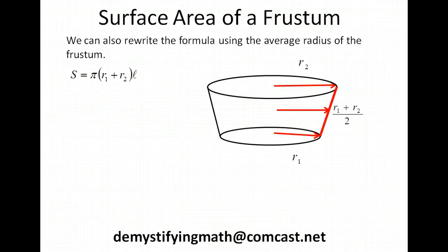We can rewrite this formula using the average radius. So if we average our two radii together, we get (r1 + r2)/2. And then what I did was multiply that by 2 so that we're not changing our formula in any way.